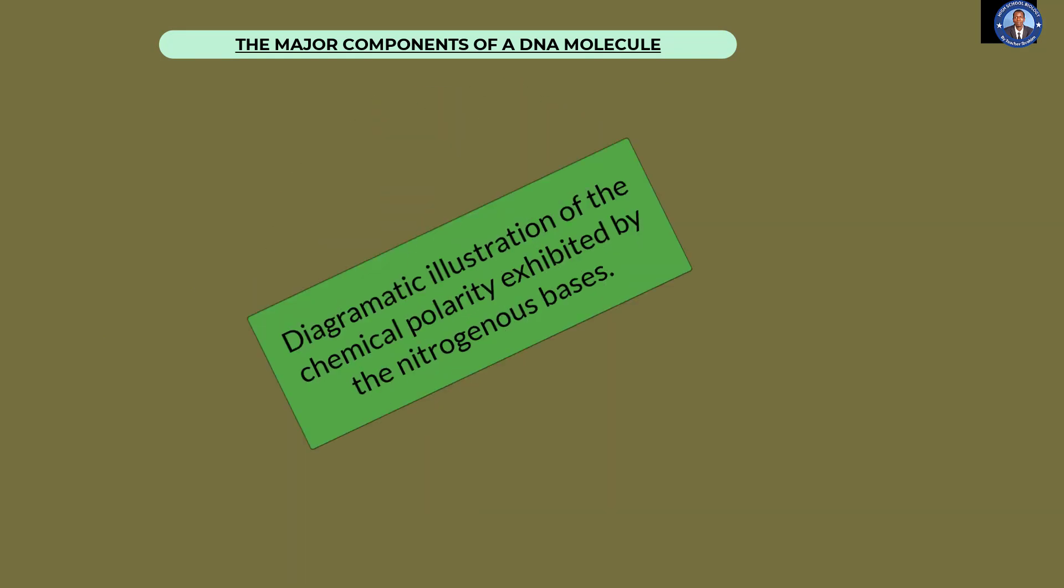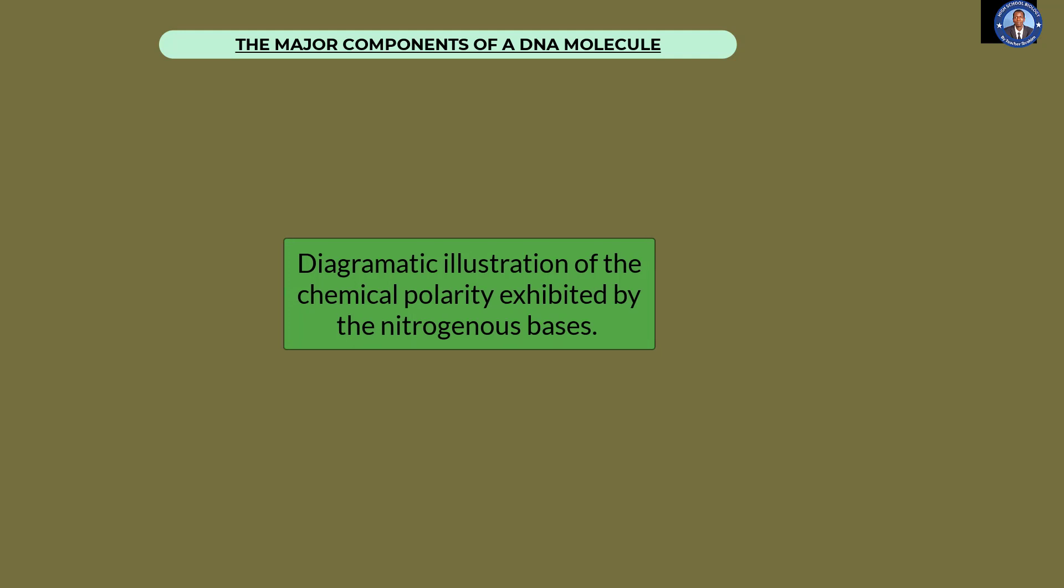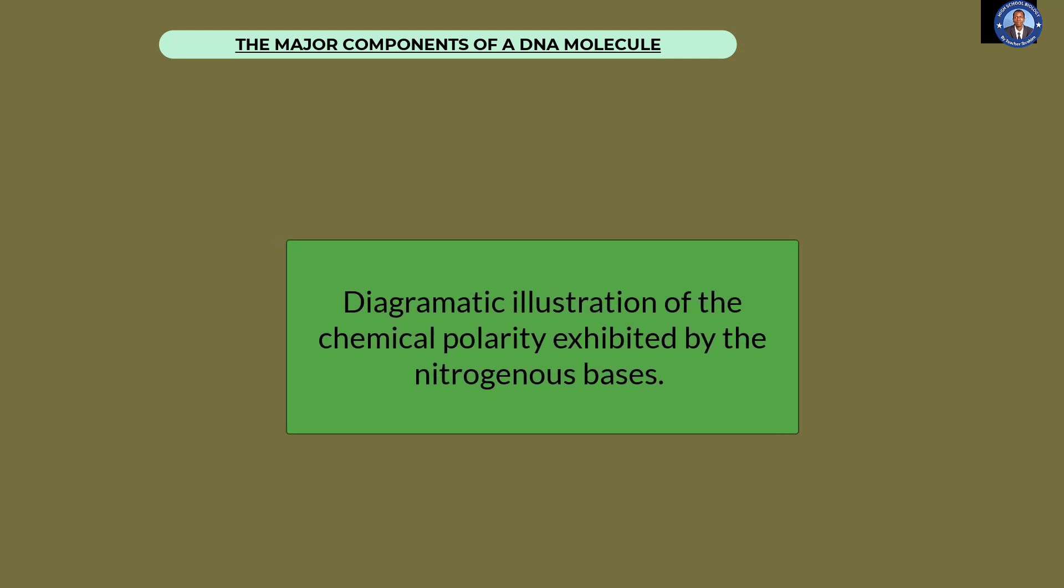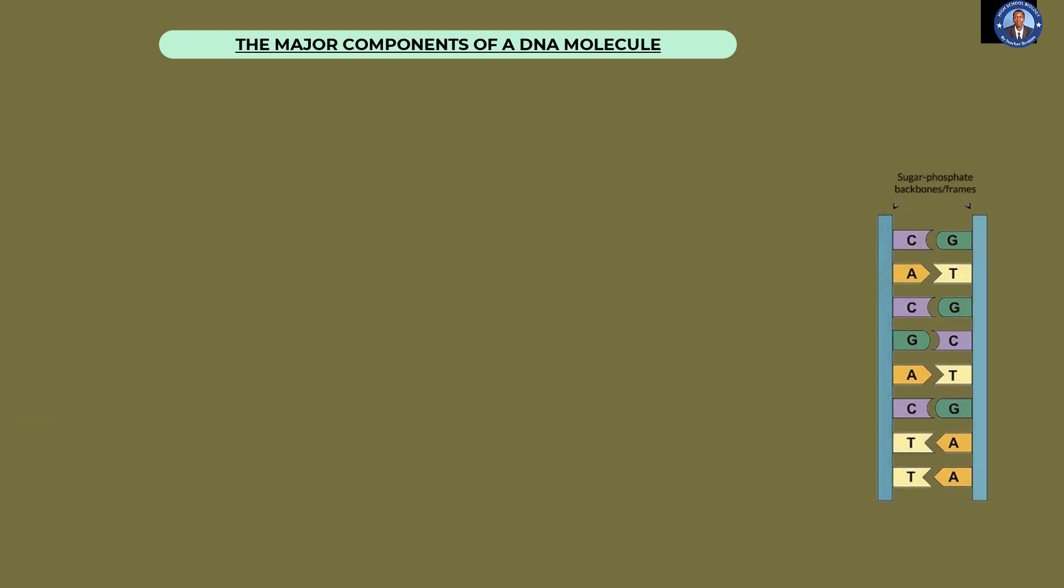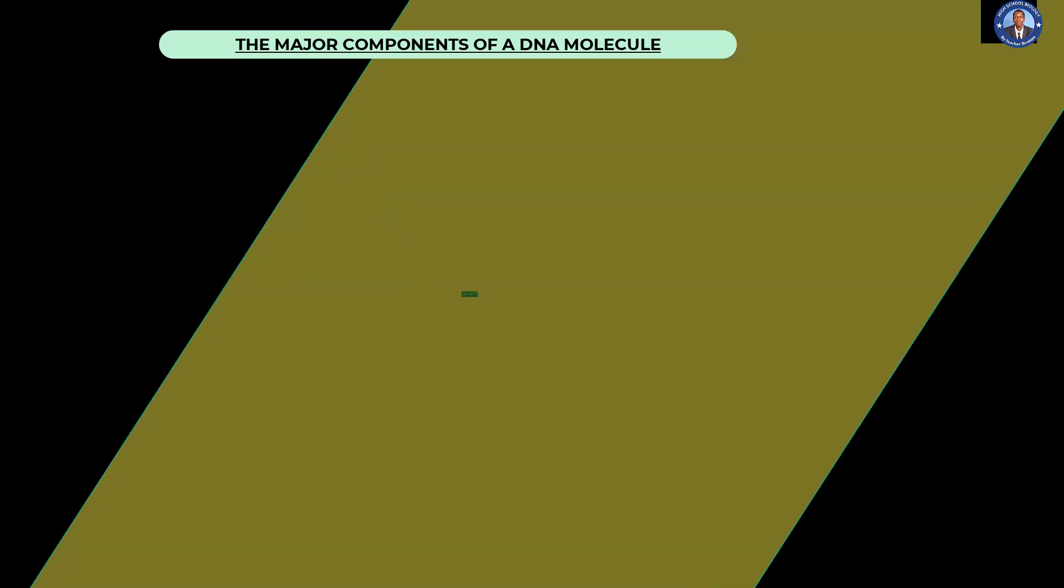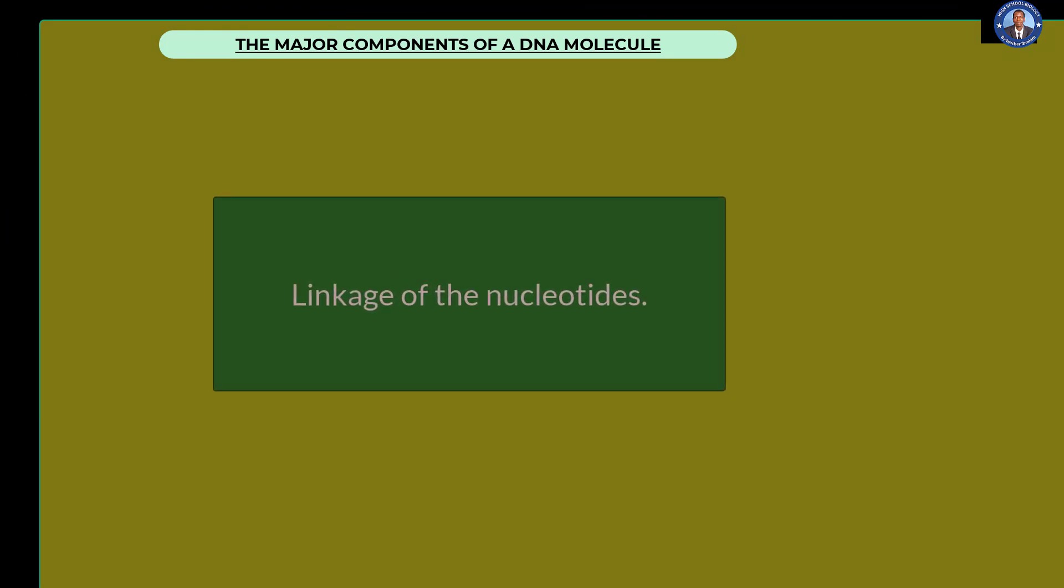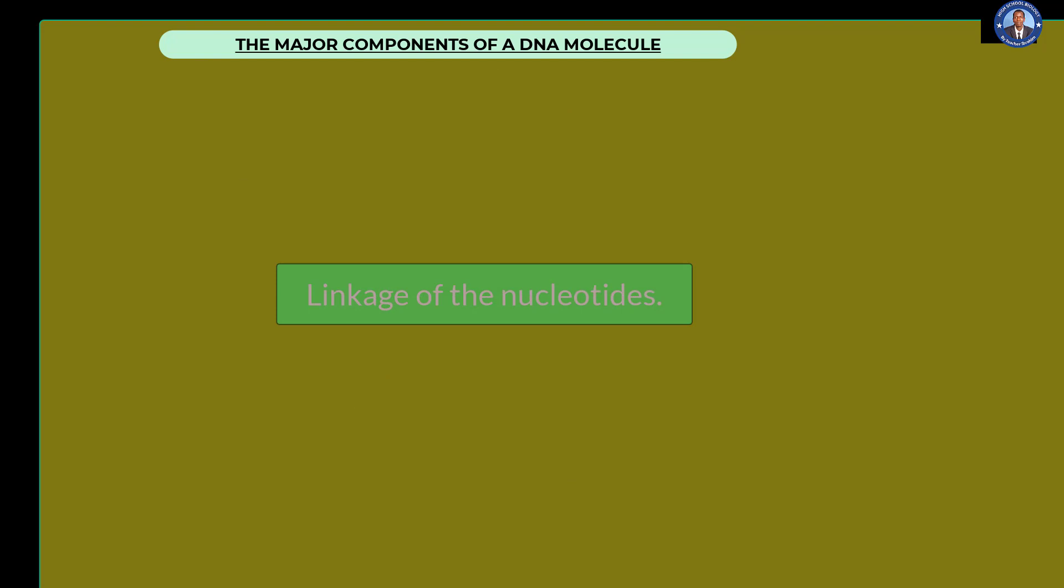That chemical polarity that is exhibited by the DNA molecule can be well explained when you look at these chemical structures of the nitrogenous bases, whereby, look at this structure of cytosine. It cannot pair up with thiamine at all, because they are not complementary to one another, and adenine also cannot fit into guanine, but adenine fits into thiamine, while cytosine fit into guanine. And, therefore, the nucleotides are continuously linked to one another, hence forming a DNA strand.